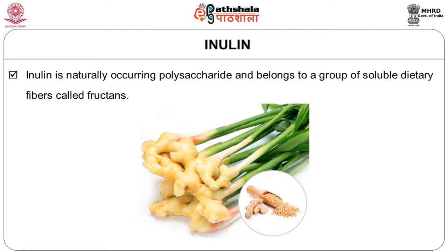Inulin is a naturally occurring polysaccharide and belongs to a group of soluble dietary fibers called fructans. Dietary fiber is divided into insoluble dietary fiber and soluble dietary fiber. Inulin belongs to the group of soluble dietary fiber. It is a non-digestible carbohydrate and this property allows it to pass through the small intestine for fermentation in the large intestine, where it interacts with intestinal microflora. Most plants synthesize and store inulin as a means of storing energy, and it is usually found in roots and rhizomes.